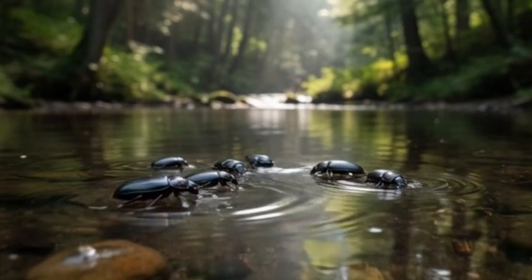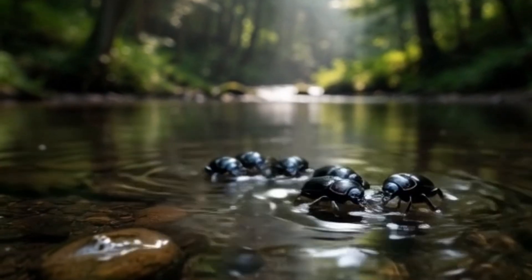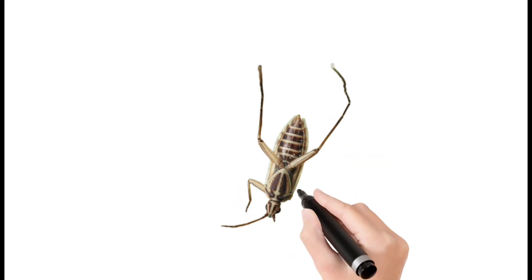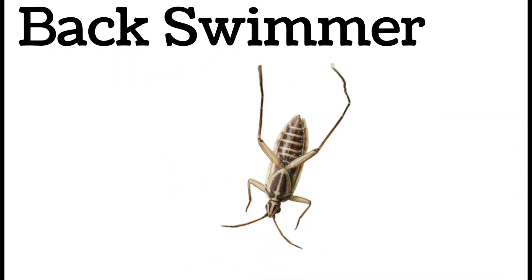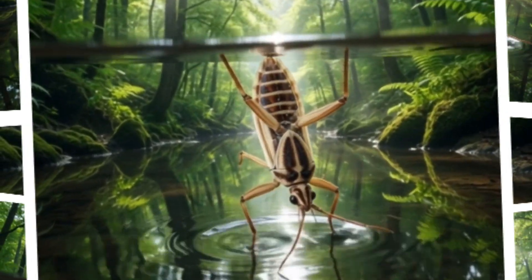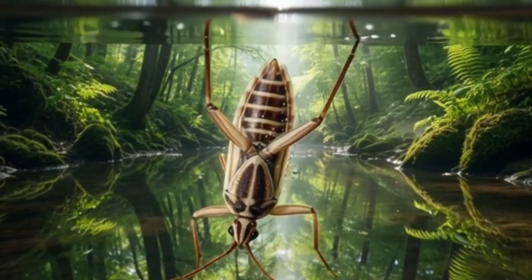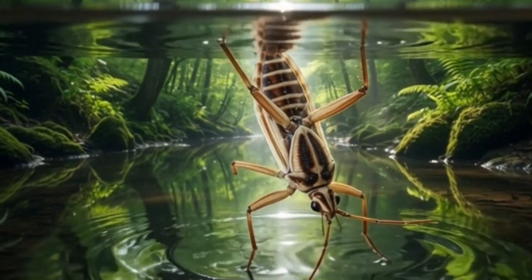Next, whirligig beetle: swims in circles on water. Has divided eyes for above and below water. Moves in fast spinning motion. Feeds on insects on water surface. Found in ponds. Next, backswimmer: swims upside down in water. Has paddle-shaped legs. Hunts other insects and tadpoles. Can give a painful bite. Lives in still water.